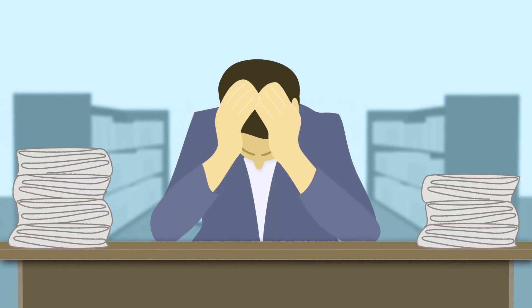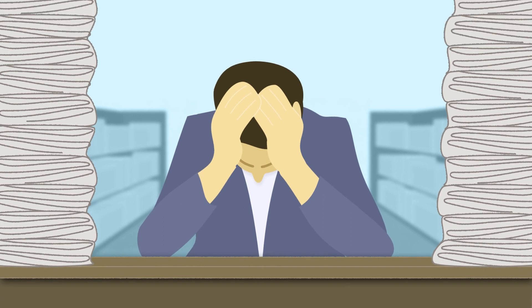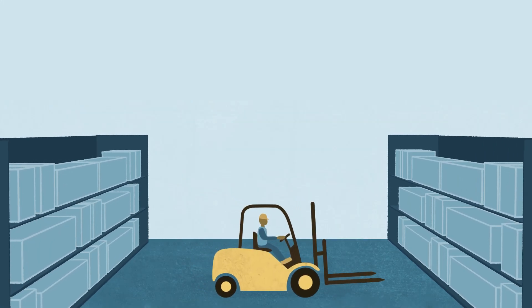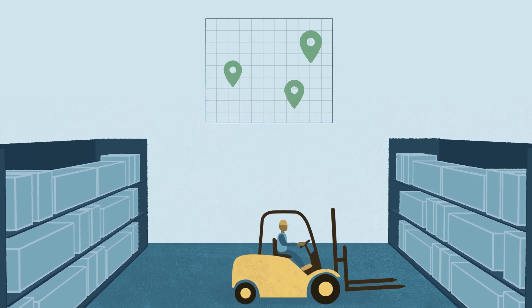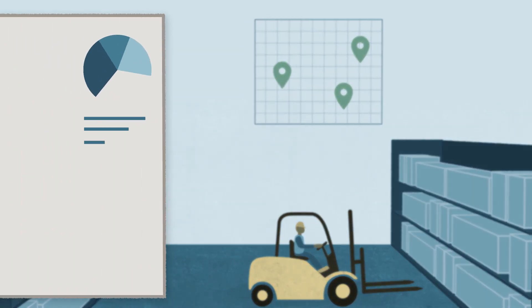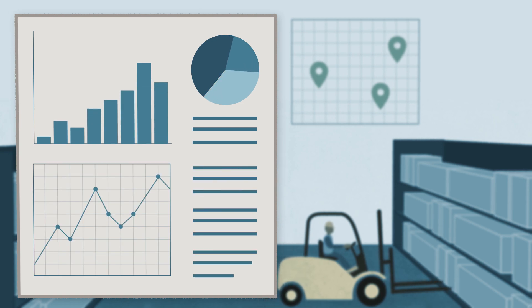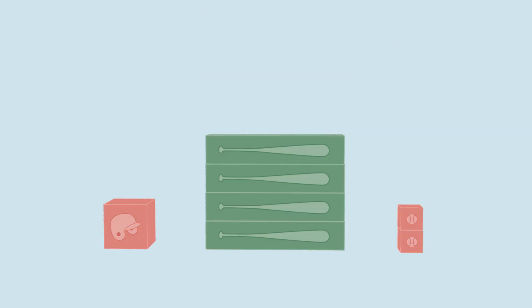Trying to track all of this information manually will quickly prove unfeasible. The solution? A system that can track on-hand and on-order inventory across locations, then use that data to automatically calculate metrics and sort items. An inventory management system that can monitor inventory in real-time gives a business the insight it needs to increase profitability.